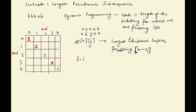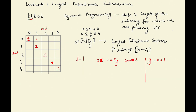Now let's see substrings of length 2. For a substring starting at x and ending at y where y equals x plus 1: if the character s[x] is equal to s[y] then our answer is 2, because we have a palindrome of size 2; otherwise our answer is 1. So for index 0 to 1 the answer is 2, for 1 to 2 it's 2, for 2 to 3 it's 1 because s[x] is not equal to s[y], and for 3 to 4 the answer is also 1.